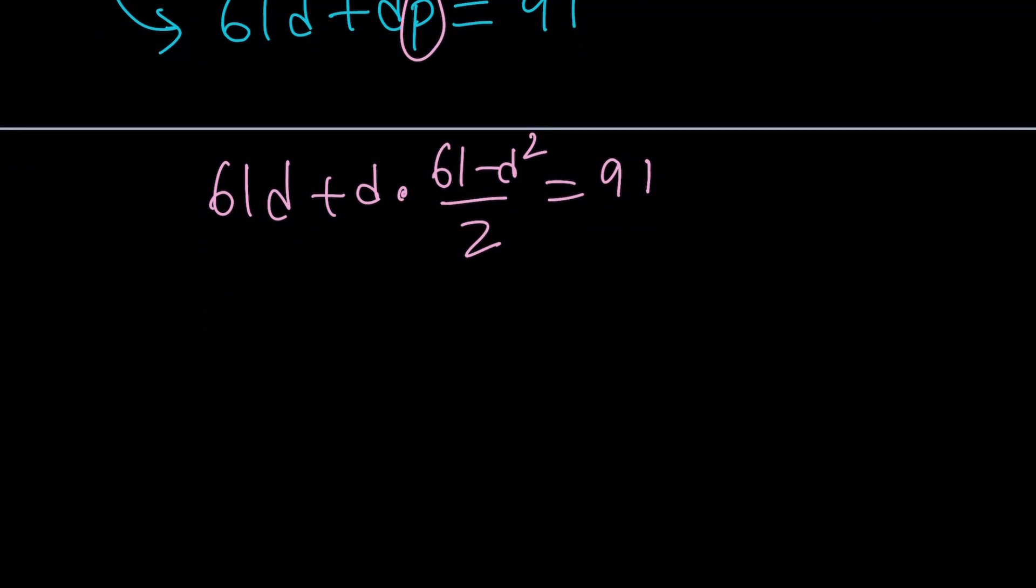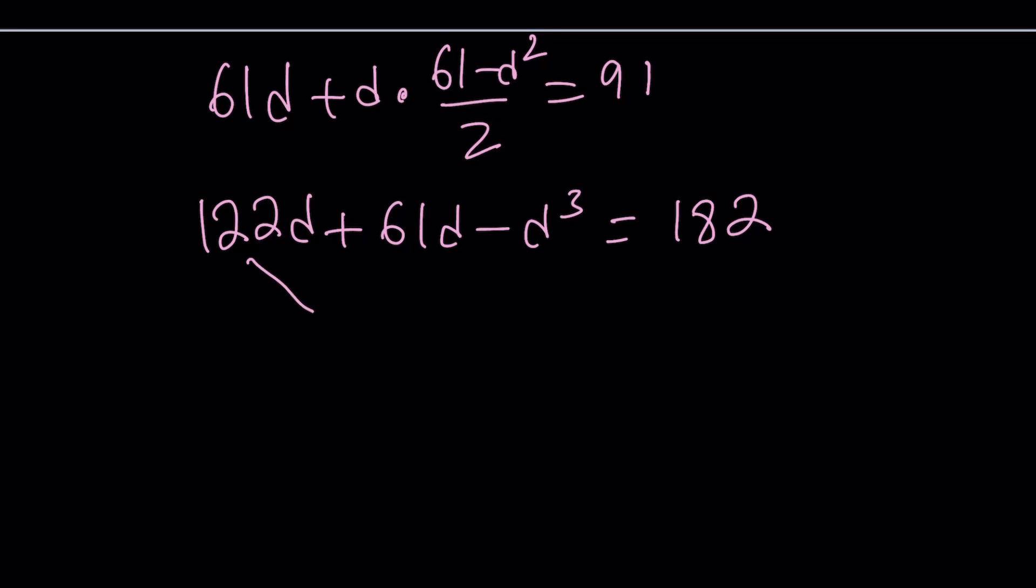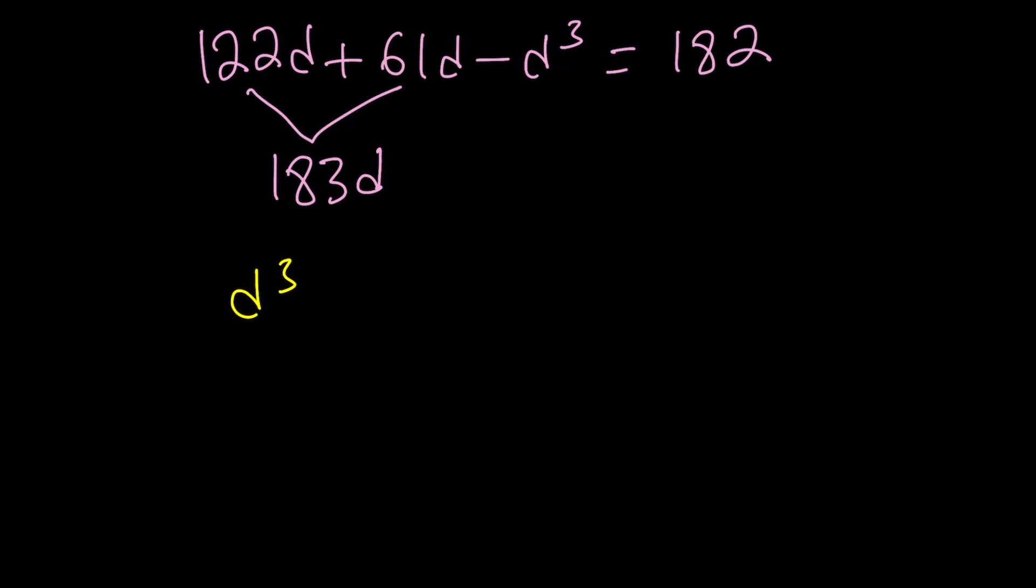Let's go ahead and solve it. First of all, you can go ahead and multiply both sides by 2. That's going to give you 122d plus d times 61, which you can write as 61d minus d cubed. We already got rid of the 2 there equals 182. Awesome. Now when you add the 122d and 61d, you're going to get 183d. Let's go ahead and put everything on the right-hand side where d cubed is positive.